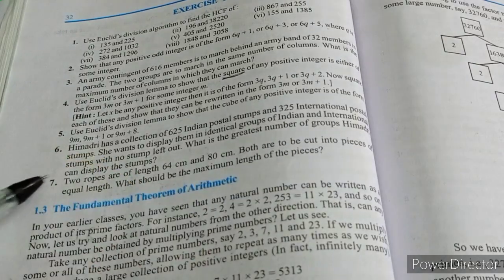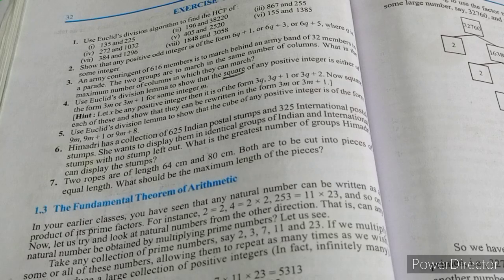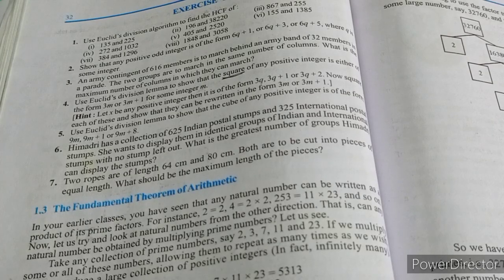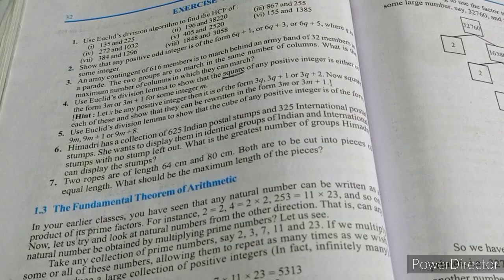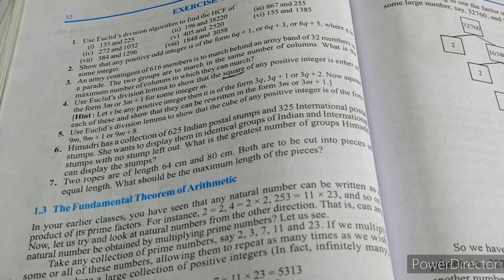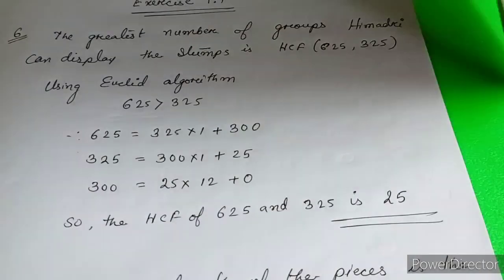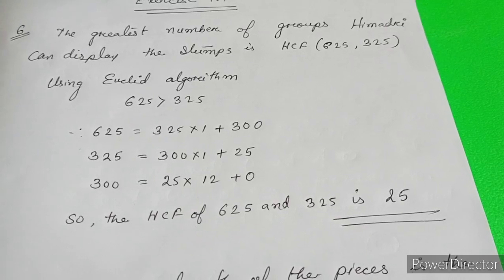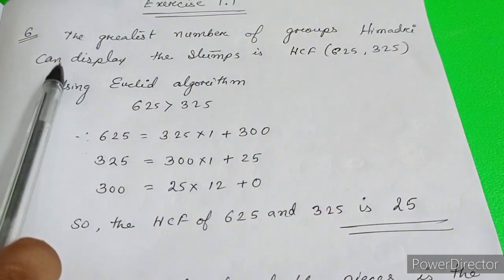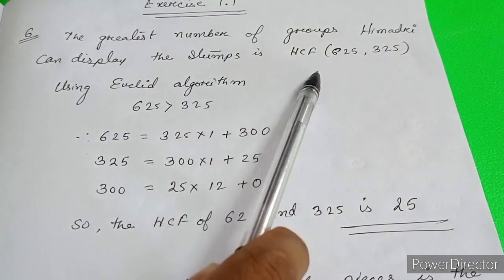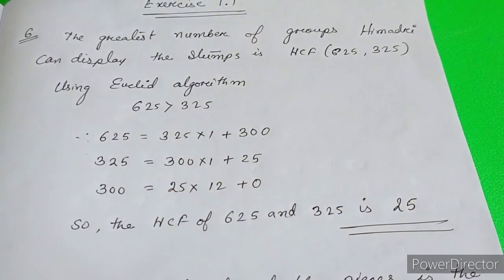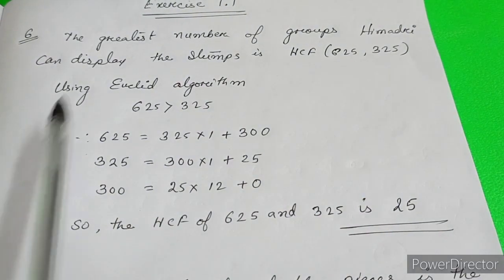So whenever we are talking about maximum number, the greatest number is nothing but HCF of those numbers. Now we will find the solution. The greatest number of groups Himadri can display the stamps is HCF of 625 and 325. By Euclid's algorithm, we are finding the HCF.